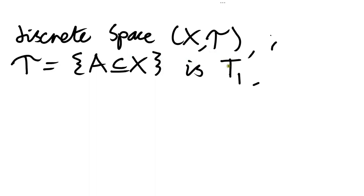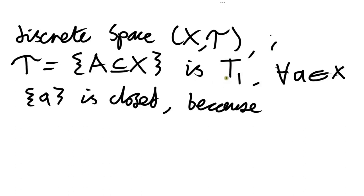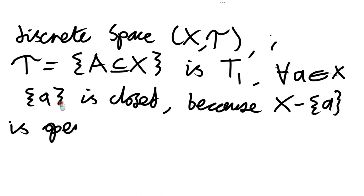The proof is basically just that for every element of this space, the set that just contains a is closed. The reason that this set just containing a is closed is because the complement — the set of elements not equal to a — has to be open. Why does it have to be open? Because it's a subset of capital X, and every subset of capital X is an open set in the discrete space.